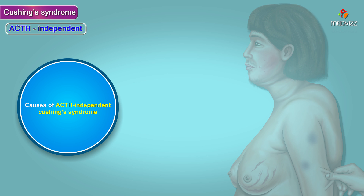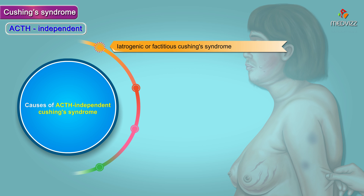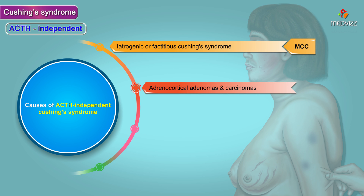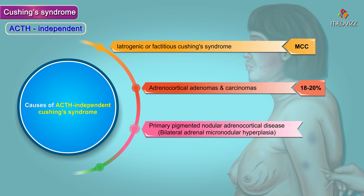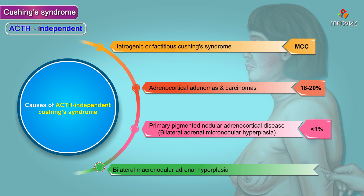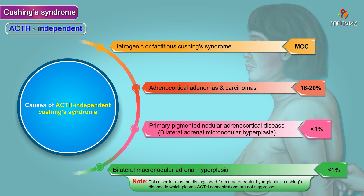ACTH independent. The causes of ACTH independent Cushing syndrome are as follows. Iatrogenic or factitious Cushing syndrome is by far the most common cause. Adrenocortical adenomas and carcinomas make up 18 to 20 percent. Primary pigmented nodular adrenocortical disease, also called bilateral adrenal micronodular hyperplasia, and bilateral macronodular adrenal hyperplasia are each less than 1 percent. This disorder must be distinguished from macronodular hyperplasia in Cushing's disease in which plasma ACTH concentrations are not suppressed.